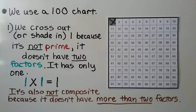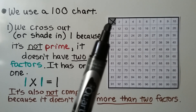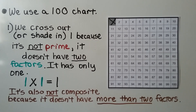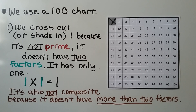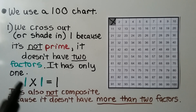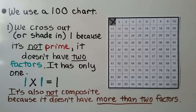We're going to use a 100 chart and cross out or shade in number 1, because it's not prime — it doesn't have 2 factors. It only has 1, since 1 times 1 is 1. So it's not prime, and it's also not composite because it doesn't have more than 2 factors.